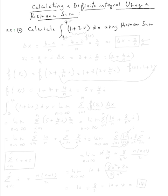Using the definition of the Riemann sum, we need to know first delta x. By definition, delta x is b minus a over n. Here b is the upper limit, which is four, and a is the lower limit, which is two, divided by n — so delta x is equal to two over n.